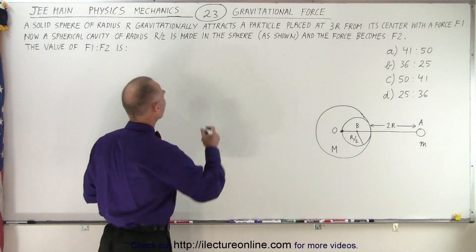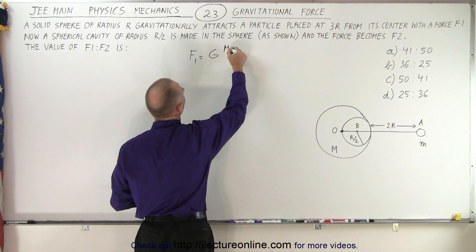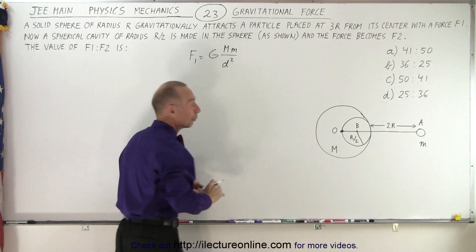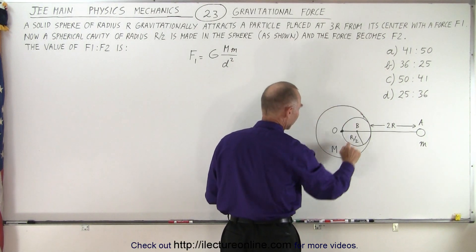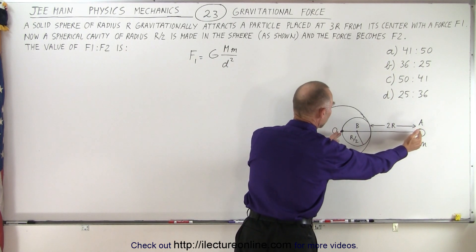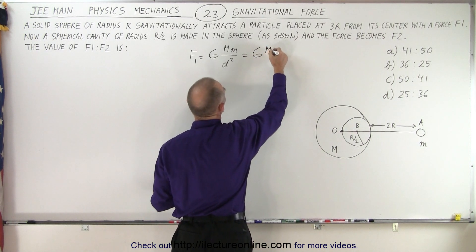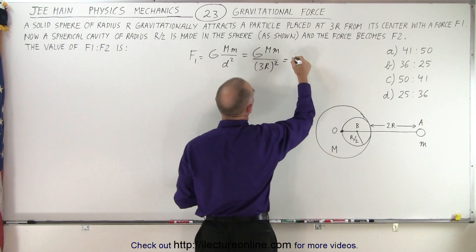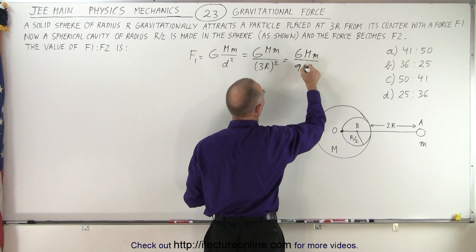First of all we need to find F1. And F1 is equal to G big M small m divided by the distance squared. Now the mass of the large object is M, the mass of the small object is small m, and the distance between them is a total of 3r. So this becomes equal to GMm divided by (3r)² which is equal to GMm divided by 9r². So that's F1.